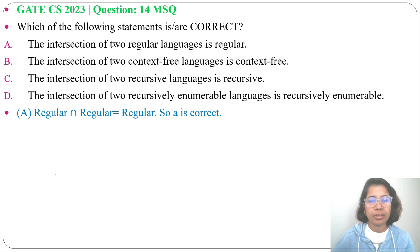Option B: The intersection of two context-free languages is context-free. This is false. Context-free language is not closed under intersection and complement. So option B is false. Two context-free languages intersection is not context-free.